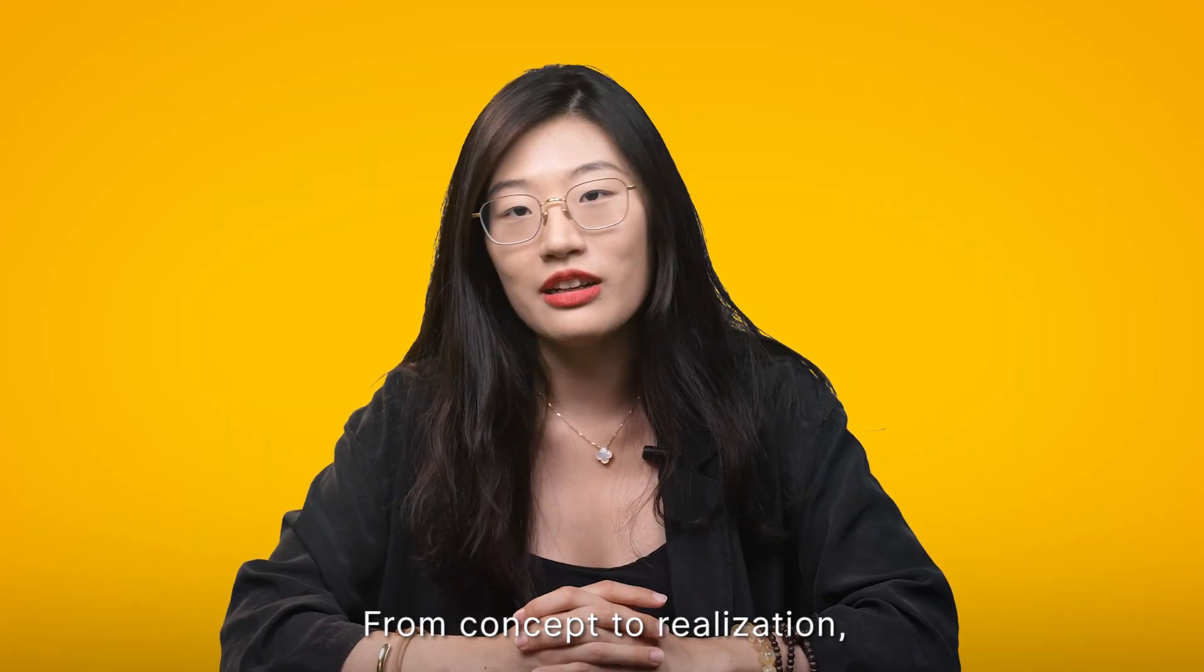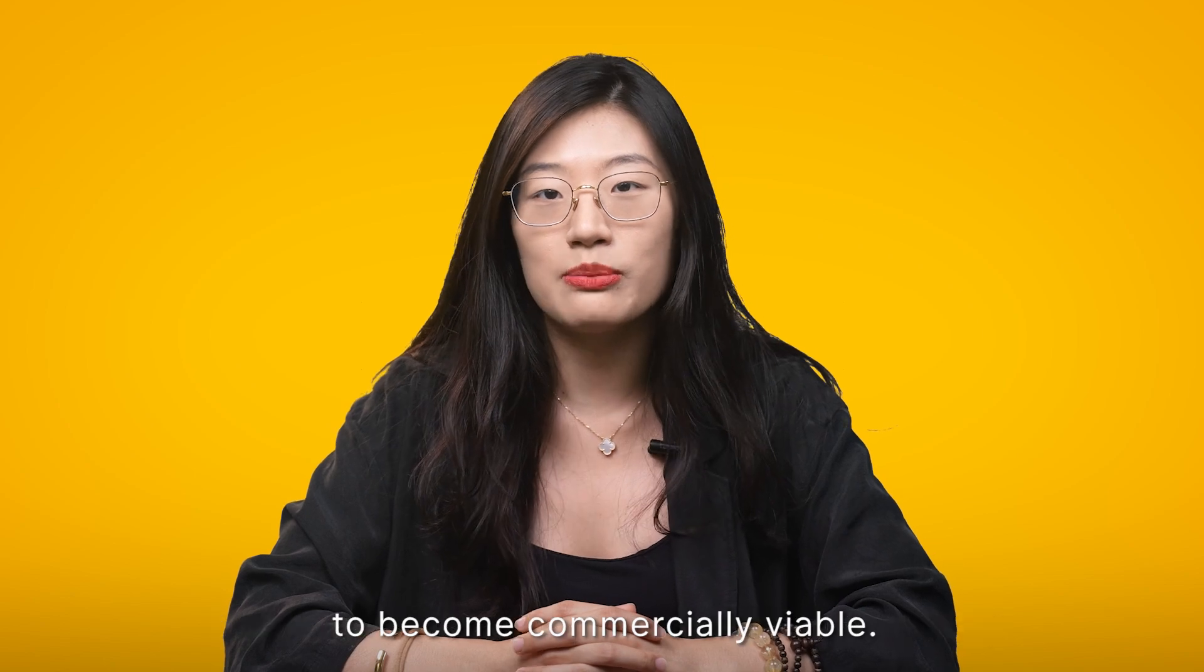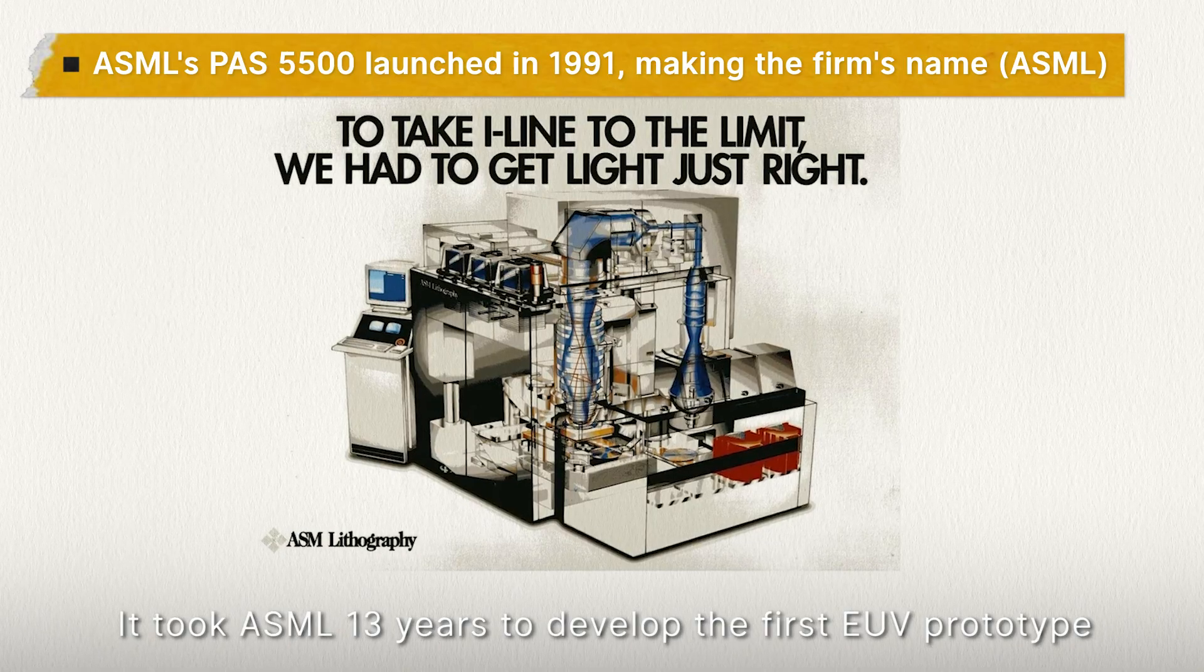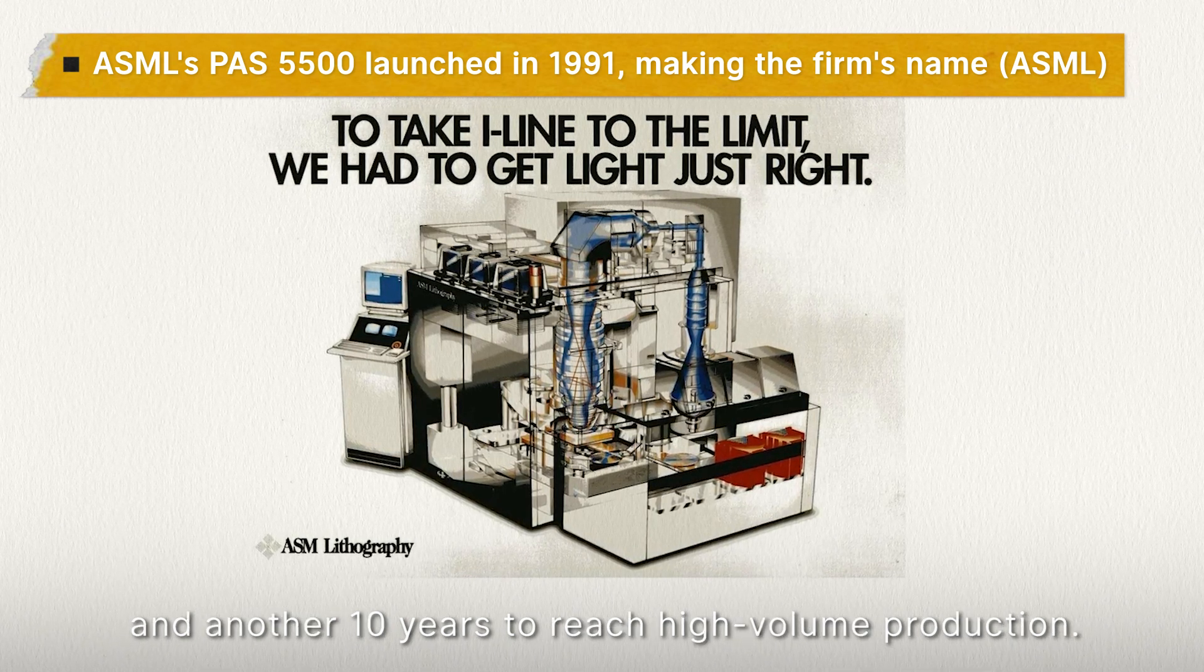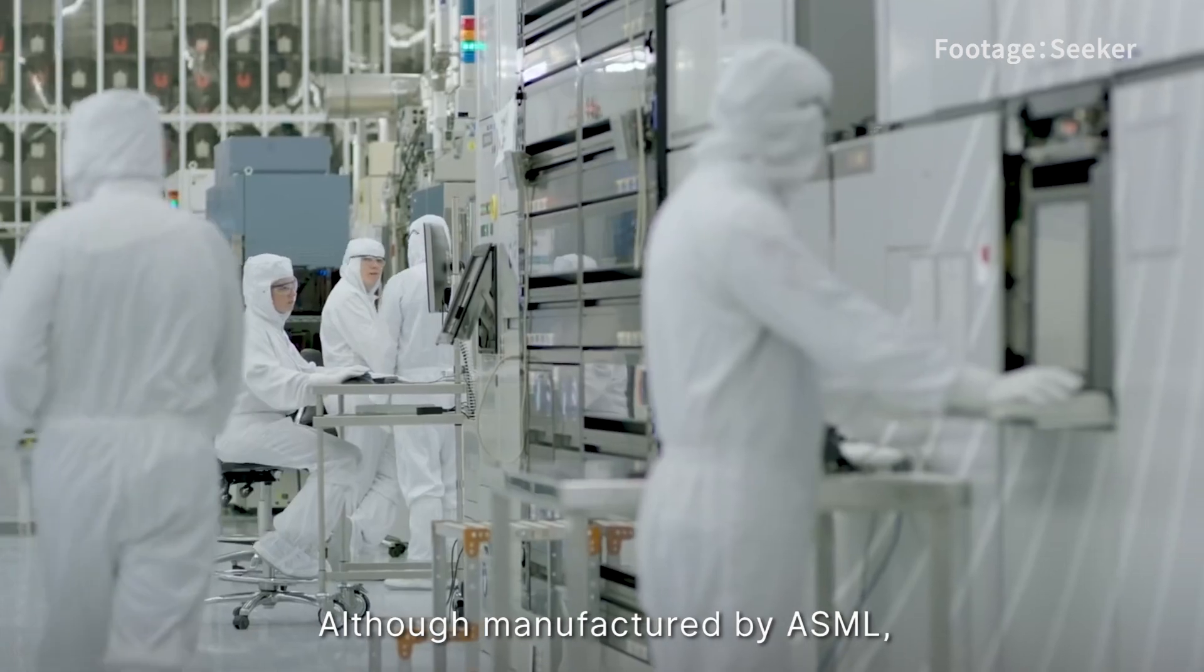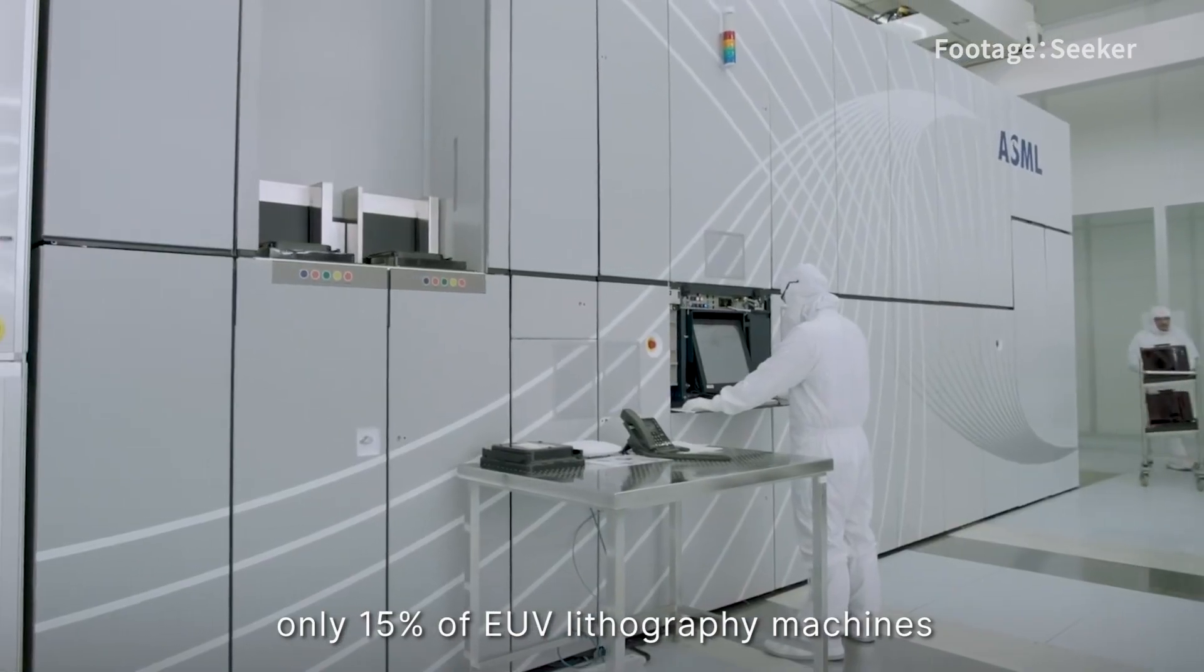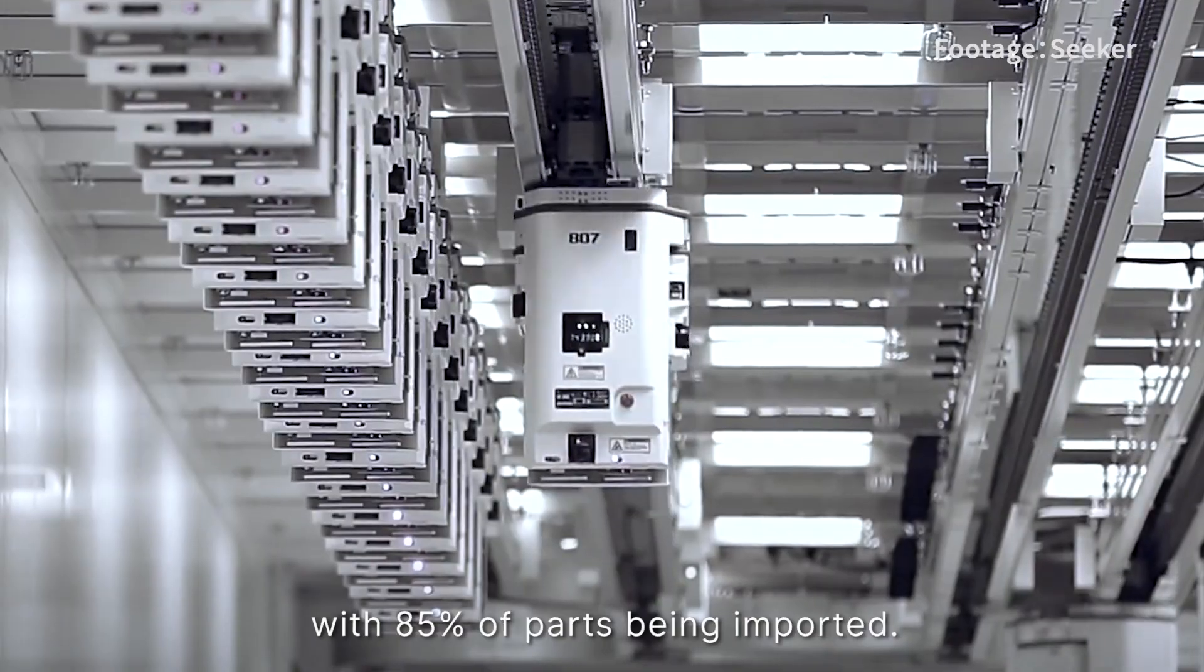From concept to realization, it took more than 20 years for EUV lithography to become commercially viable. It took ASML 13 years to develop the first EUV prototype and another 10 years to reach high volume production. Although manufactured by ASML, only 15% of EUV lithography machines are produced in-house, with 85% of parts being imported.